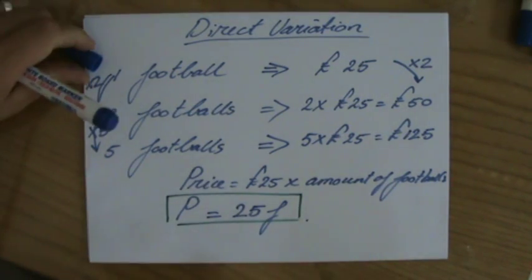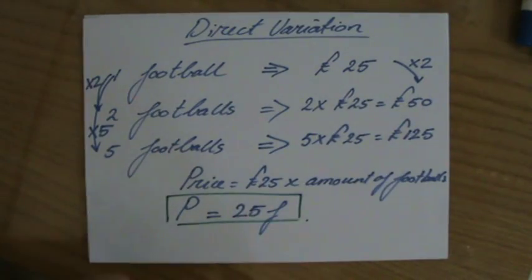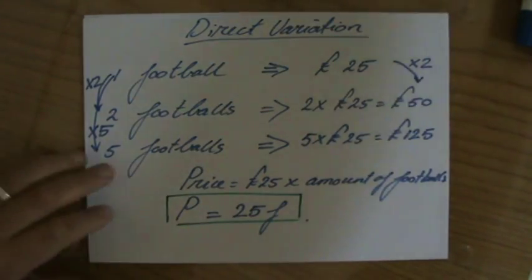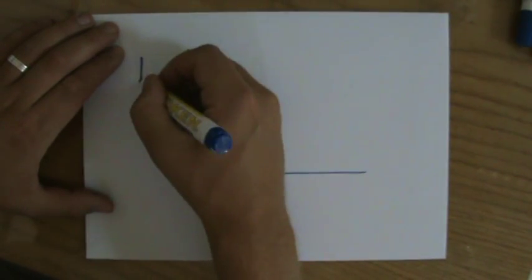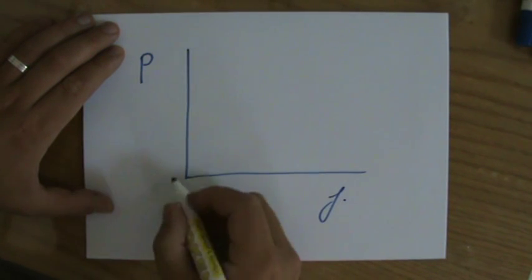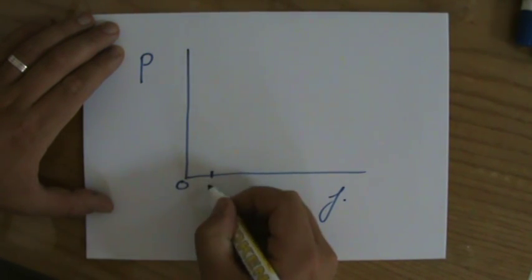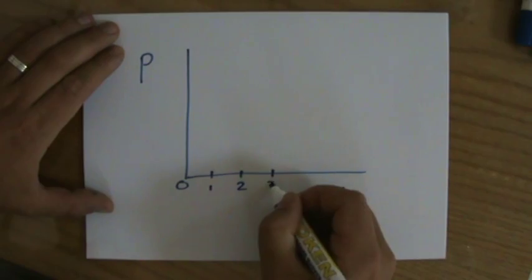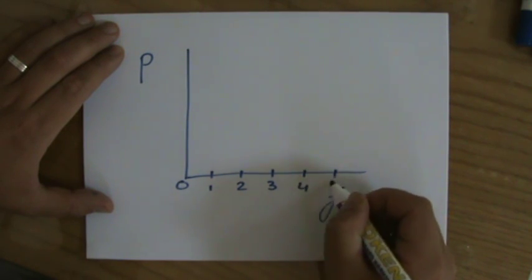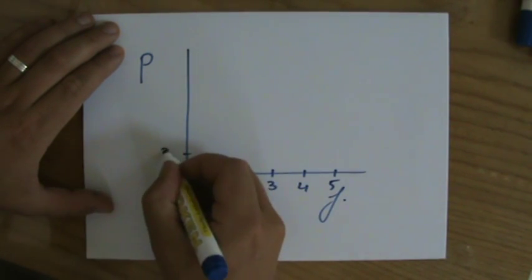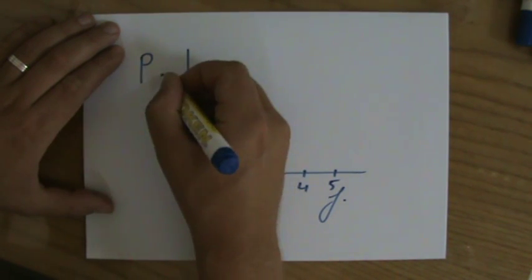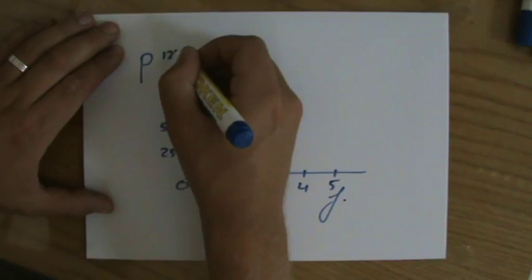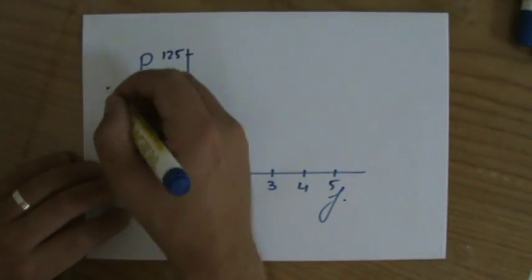If I would sketch that in a graph very quickly, this is just a sketch. If I have the price here and the amount of footballs here, the origin, one football, two footballs, three, four, five, 25 pounds, 50 pounds, 75 pounds, 100 pounds, 125.